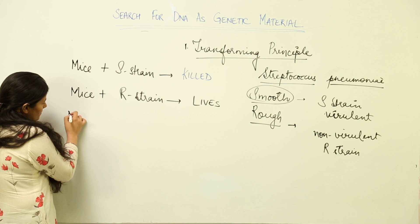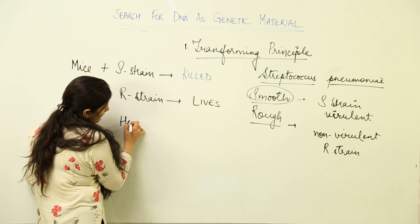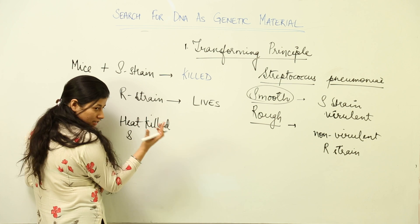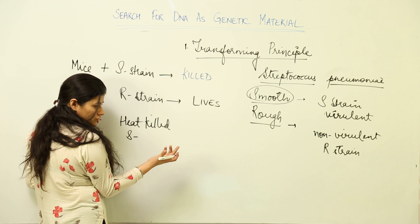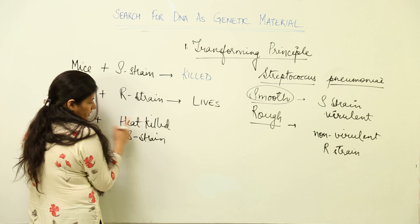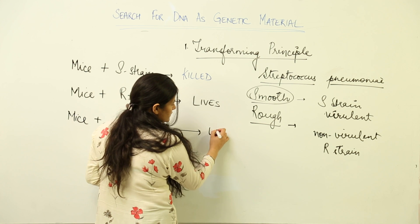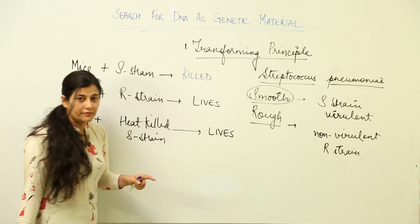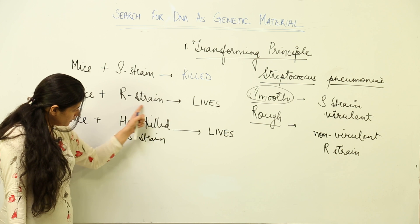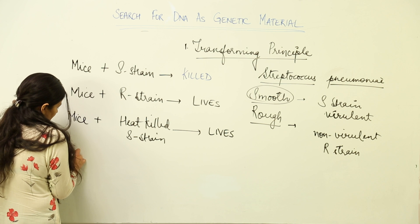In the next stage of the experiment, Griffith took S strain colonies and heat-killed them by heating at a certain temperature. When the mouse was infected with these heat-killed S strain colonies, the mouse survived again. This showed that whatever was causing the death of the mice had been inactivated by the heat-killing process.